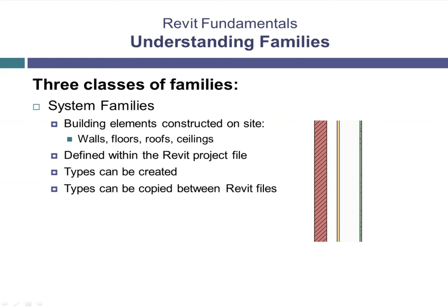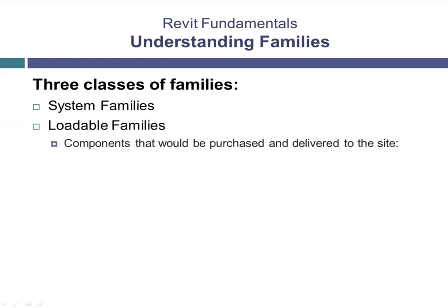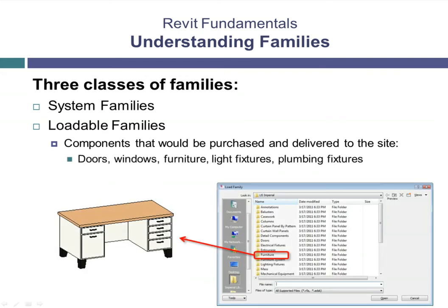Loadable families are families used to create building components such as doors, windows, furniture, and plumbing fixtures that would typically be purchased, delivered, and installed in and around a building. Most annotation elements are also provided as loadable families. Loadable families are created in external .RFA files and are imported or loaded into your projects. They are created in Revit's family editor, beginning from a specific template supplied with Revit. Revit comes with a library of loadable families. You can also download ready-made family files from various sources on the web, including many building component manufacturers' websites, or create your own custom components using the tools in the Revit family editor.